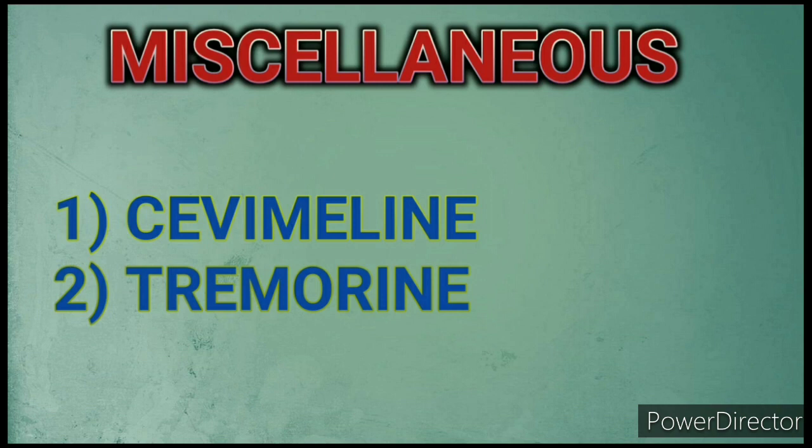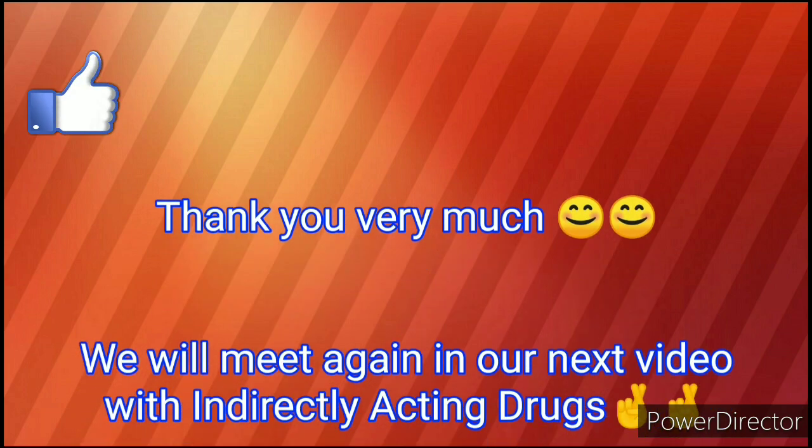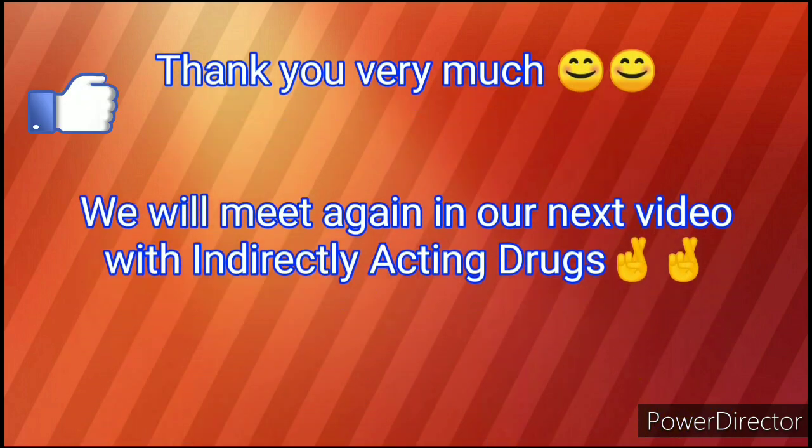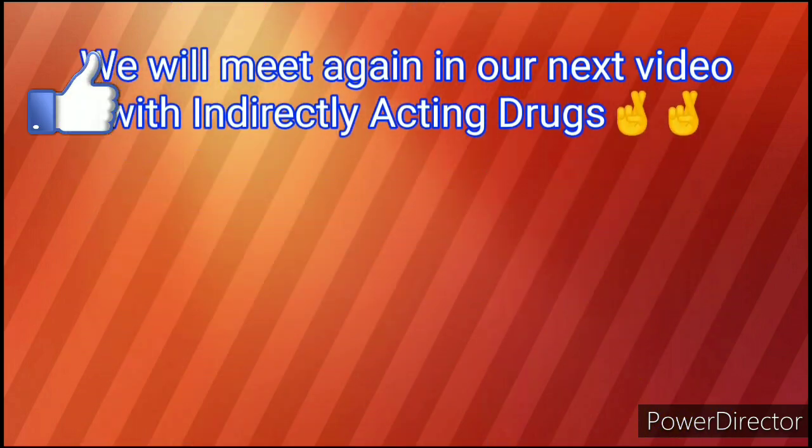The third group of directly acting drugs is miscellaneous, which is not so important. It mainly contains two drugs: first is cevimeline and the second is trimethaphan. This is all about directly acting drugs. We will meet again in our next video with indirectly acting drugs.